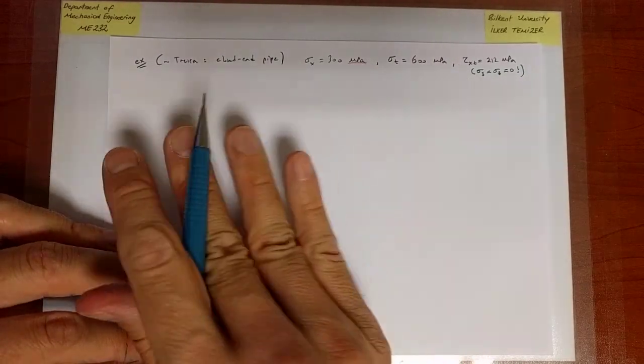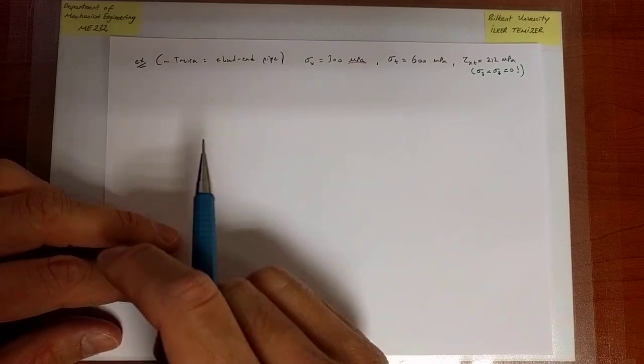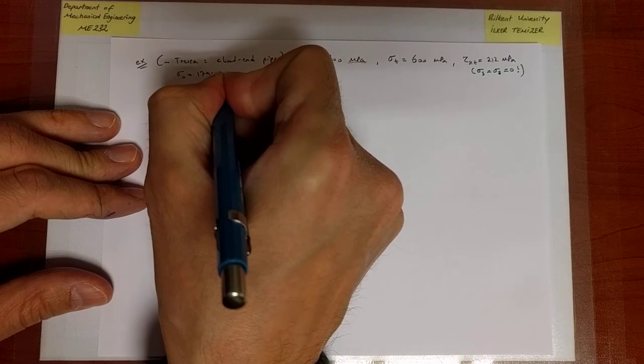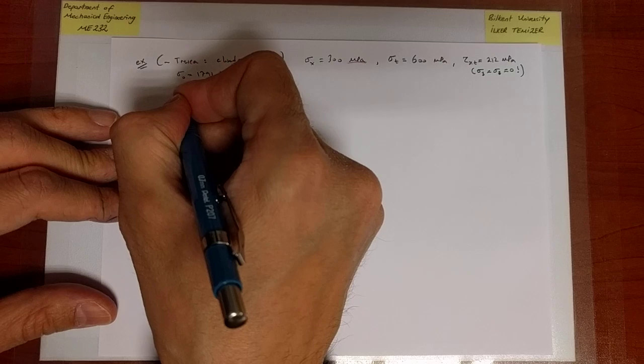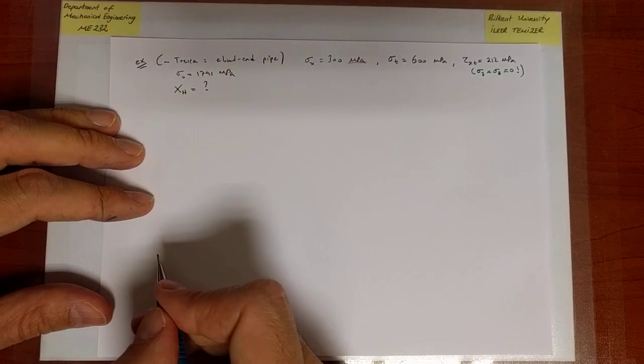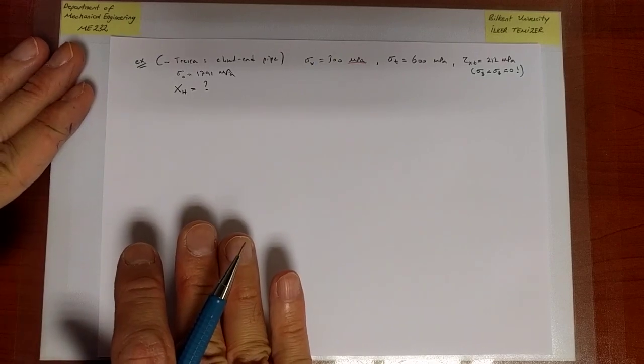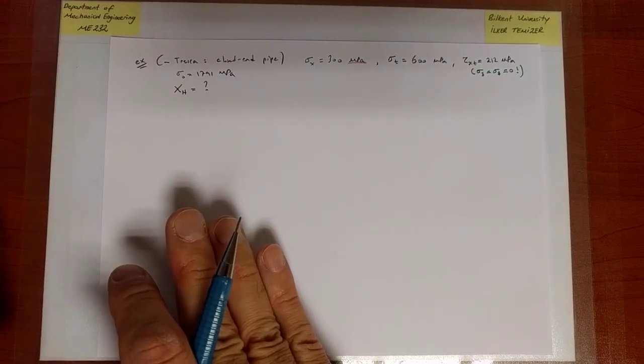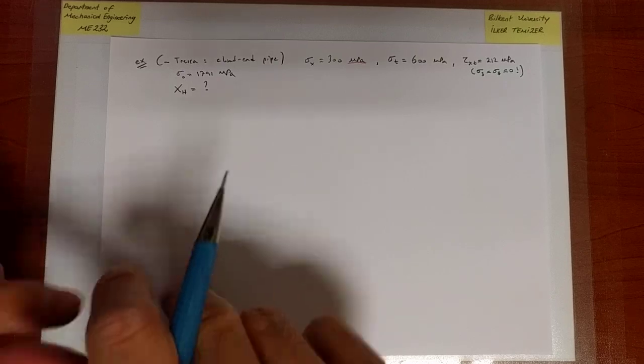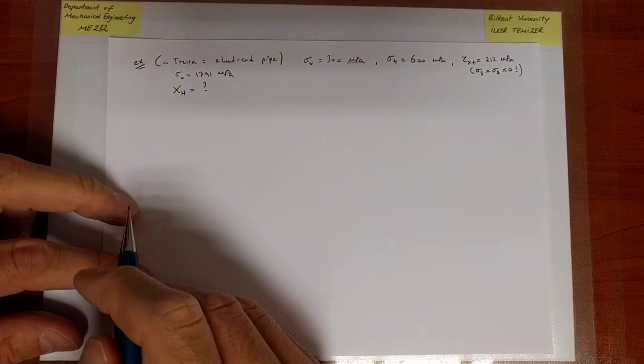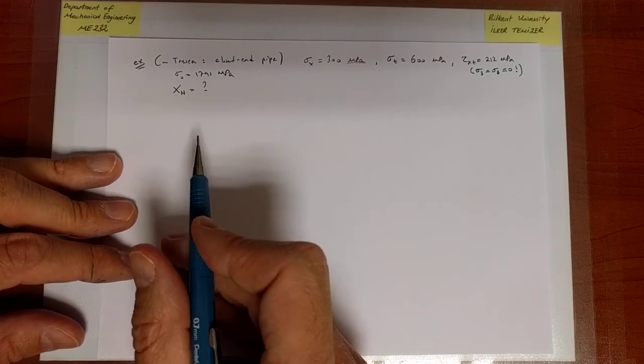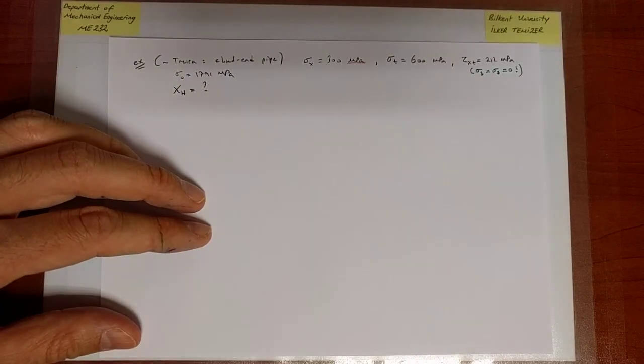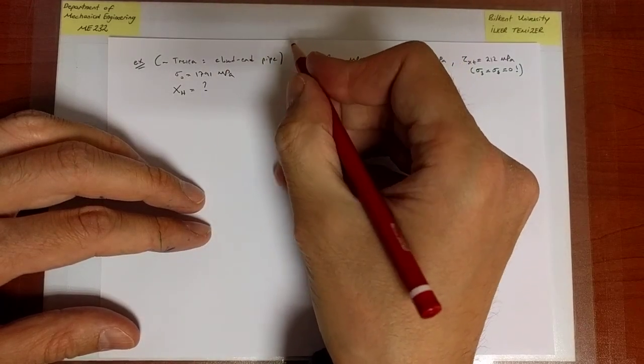That's the state of stress, and now for the same material where remember the yield strength is 1791 MPa, I would like to calculate the safety factor against yield for the von Mises criterion. In doing so, first we'll have a chance to compare it against the Tresca result, and then we'll be able to discuss whether we always have to calculate the principal stresses in order to evaluate the criterion. So that's the question I'm going to address.